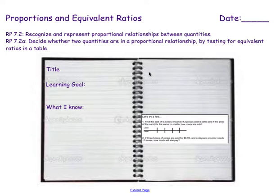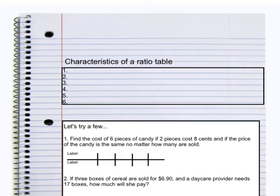You should have your foldable already pasted towards the bottom of your page because we're going to draw an information table first. If I were to grab a ruler or a straight edge, we're going to start by identifying the characteristics of a ratio table.